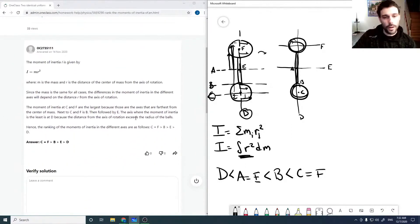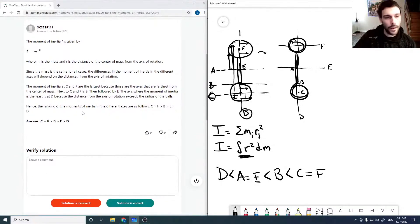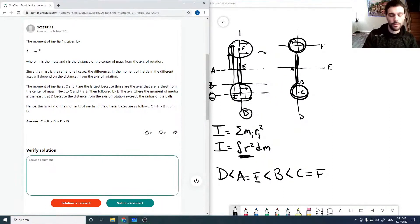R squared is our biggest factor. We did it in the opposite direction, but C equals F is greater than B is greater than E is greater than D. They missed A but that's okay.